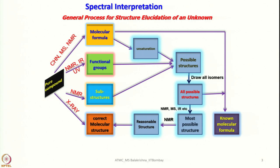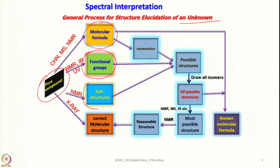Let us look into spectral interpretation and the general process we should follow for structural elucidation of an unknown sample. First we should address purification of the compound. For a pure compound, CHN analysis or mass spectrometry data along with NMR gives information about the molecular formula. Then NMR, IR, and UV can give insight into the functional groups present, and NMR can also provide information about substructures.